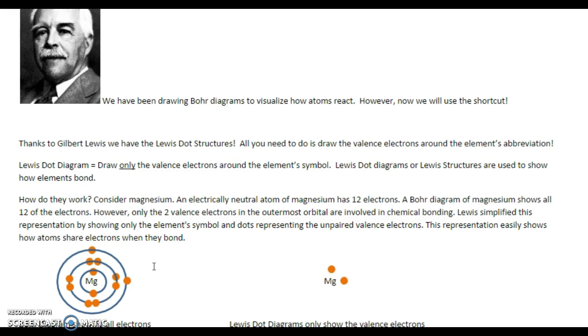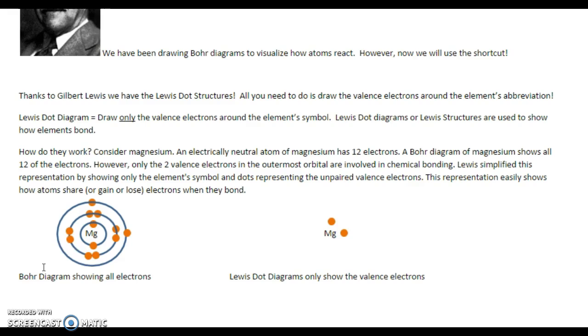Lewis simplified this representation by showing only the element's symbol and the dots representing the unpaired valence electrons. That's because these are the only ones that bond. This representation easily shows how atoms share electrons when they bond. And when I mean share, it can also mean gain or lose, depending on which ones are bonding with which other elements. So again, Bohr diagrams show all the electrons. Lewis dot diagrams show only the valence electrons.